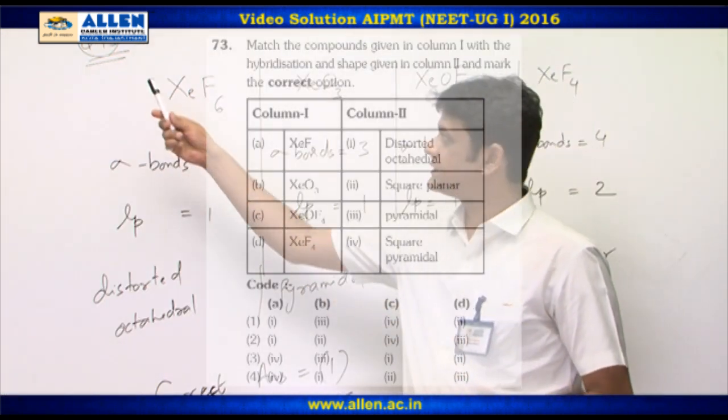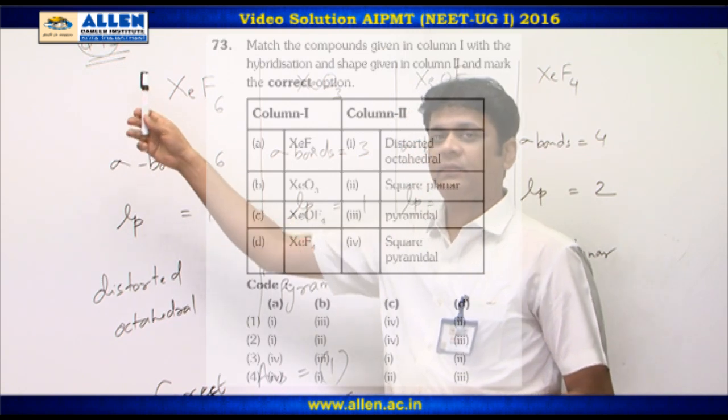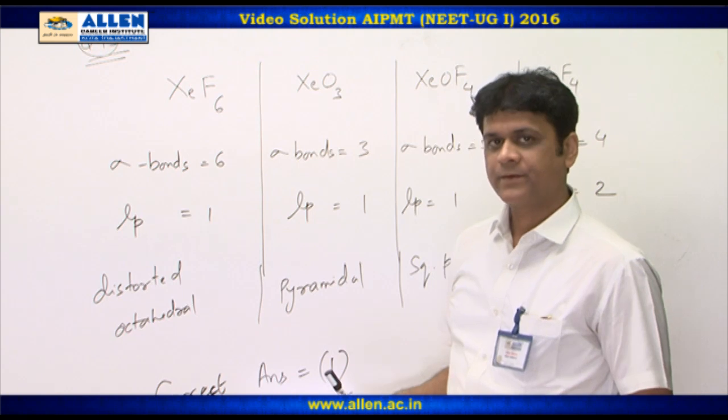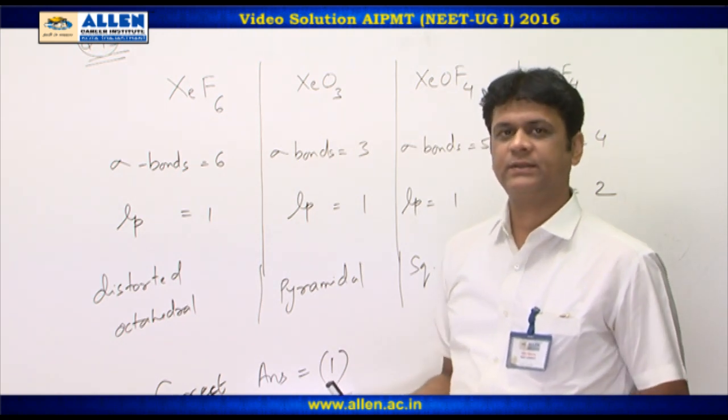In question number 73, it is asked to match the column between some covalent molecules and their respective shapes. We will use the VSEPR concept in this question.